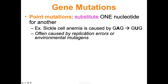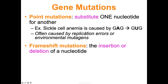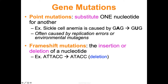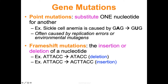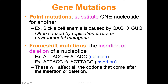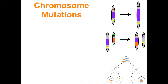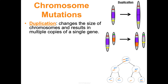Even just one letter change can make a big difference, as in sickle cell anemia. A frameshift mutation is worse — it's the insertion or deletion of a nucleotide. During translation, mRNA is read in codons, which are triplets. If you delete or add a letter, it messes up the reading frame — every codon downstream is affected. So generally, a frameshift mutation has a bigger impact than a point mutation.